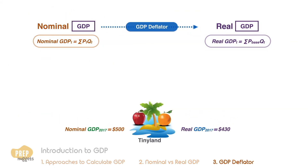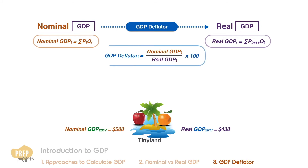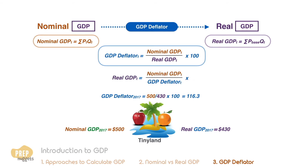The GDP deflator is a price index that can be used to convert nominal GDP into real GDP and can be calculated using this formula. For Tiny Land, the GDP deflator for 2017 is 116.3. The GDP deflator formula can be rearranged so you can easily calculate real GDP if you know the nominal GDP and GDP deflator for the year.